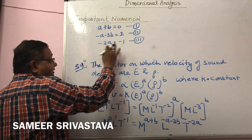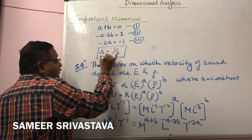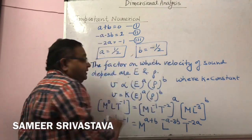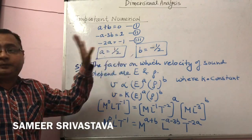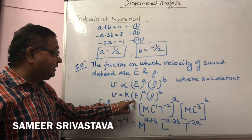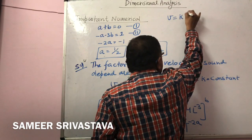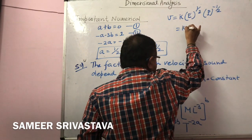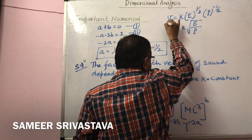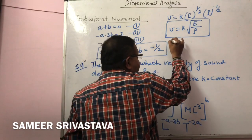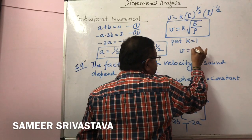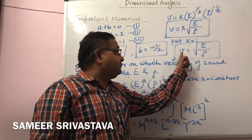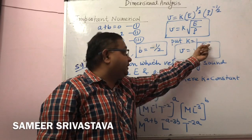From equation 3: a = 1/2. Substituting into equation 1: b = −1/2. So V = K·E^(1/2)·ρ^(−1/2) = K√(E/ρ). Putting K = 1, the final relation is V = √(E/ρ). This is the formula relating velocity of sound, modulus of elasticity, and density.